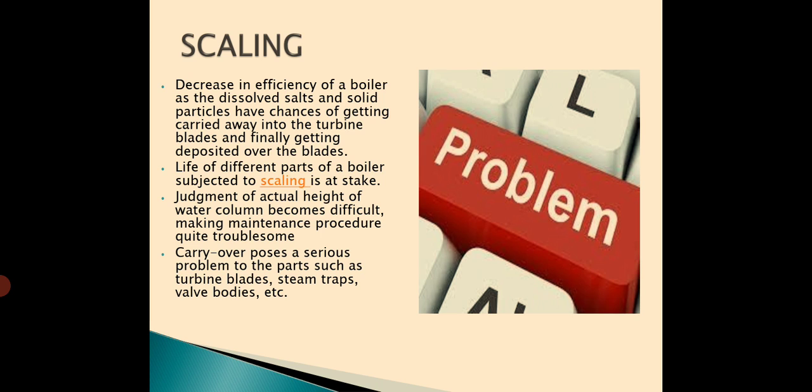Now, what are the problems caused due to scale formation or scaling? This scaling decreases the efficiency of a boiler as the dissolved salts and solid particles have chances of getting carried away into the turbine blades and finally getting deposited over the blades. The lifetime of the different parts of the boiler subjected to scaling is at stake. Judgment of actual height of the water column also becomes difficult making maintenance procedure quite troublesome, and carry over poses a serious problem to parts such as the turbine blades, steam traps, and valve bodies. These are some of the problems. Now, how to overcome these problems?